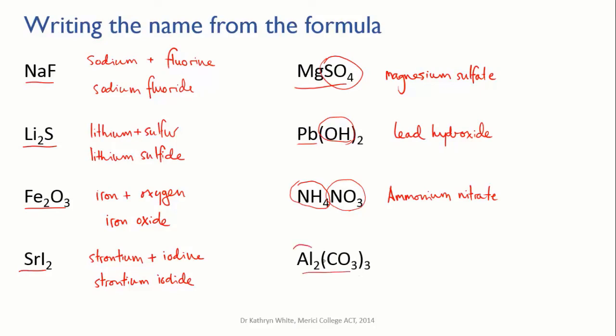This last one, Al2(CO3)3, has two aluminum ions. The polyatomic anion is carbonate, CO3. It's in brackets with a subscript three, meaning there are three carbonate anions for every two aluminum ions.